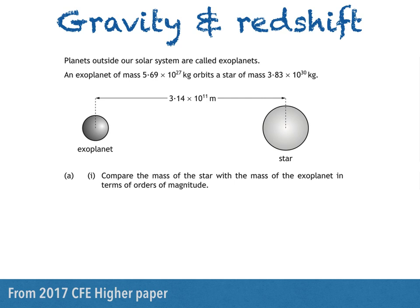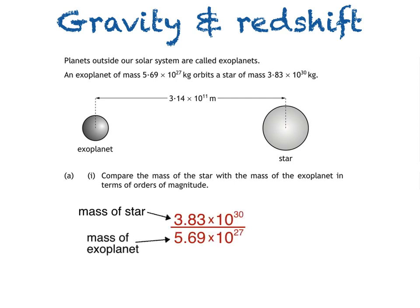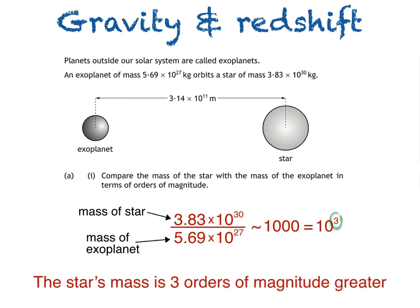To do this, we just divide the mass of the star by the mass of the exoplanet, which gives us a value of 673. We then round it to the nearest power of 10, so this would round to 1000, which can be written as 10 to the power of 3. And this is our answer — the star's mass is 3 orders of magnitude greater. When answering questions like this, it's basically the power of 10 we're trying to find.